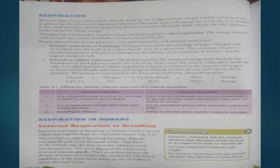Internal respiration, or cellular respiration, involves the release of energy from food by breaking it down inside the cells of the body. Since this process takes place inside the cell, we call it internal or cellular respiration. Glucose is oxidized — meaning glucose combines with oxygen — to form carbon dioxide, water, and energy. Carbon dioxide and water vapour are the by-products formed. The process is represented by the chemical equation: Glucose + Oxygen → Carbon dioxide + Water + Energy.